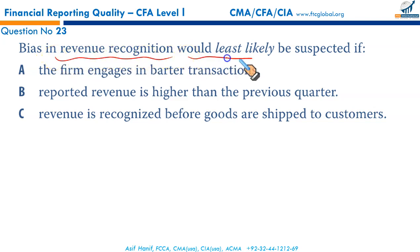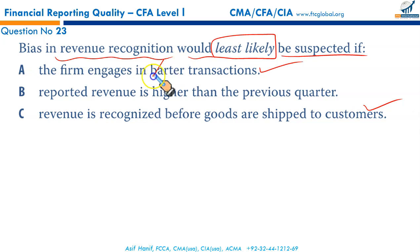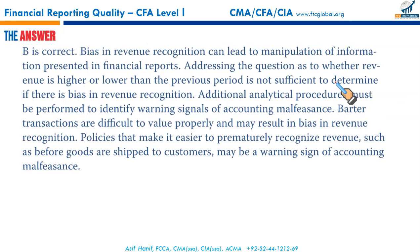Bias in revenue recognition would least likely be suspected if a firm engages in what? Barter transactions are susceptible to fraud and manipulation — bias is possible there. Revenue recognized before goods are shipped — this is bill-and-hold, deliberately done to increase revenue; bias is likely. Reported revenue higher than the previous quarter — this is perfectly fine; revenue could go up or down legitimately. This is not a reason to be suspicious. Bias is likely in A and C, but not in B. B is the correct option.